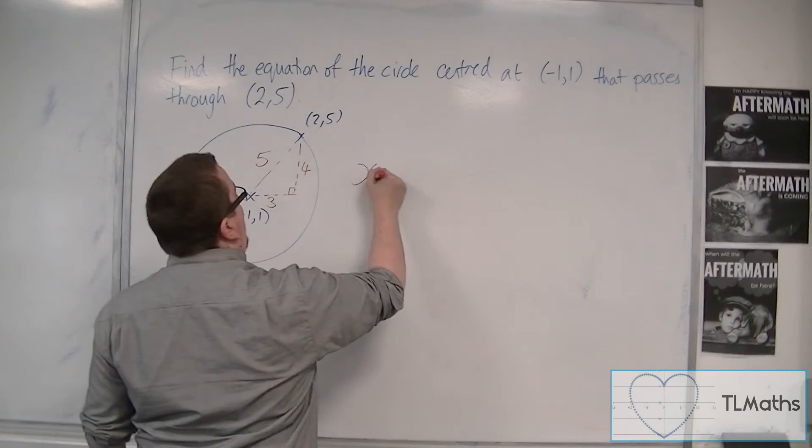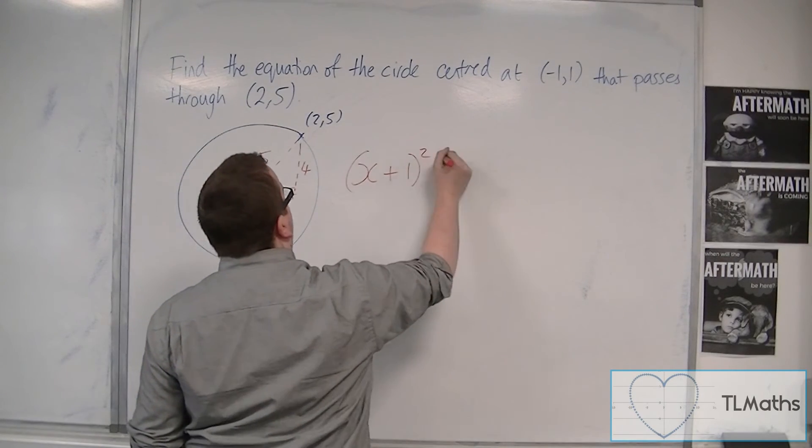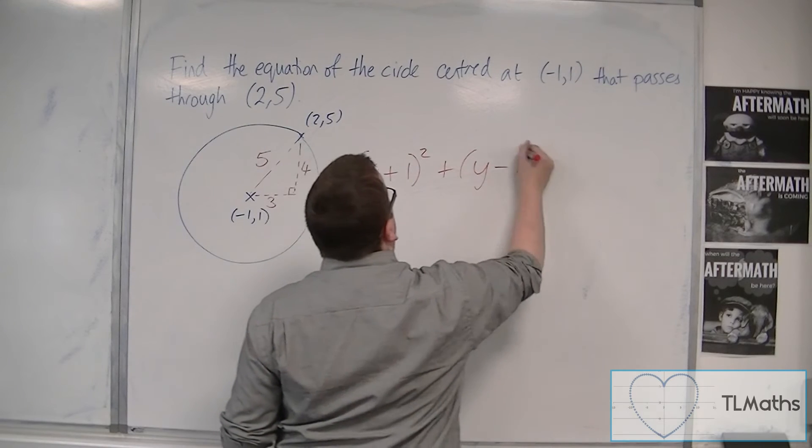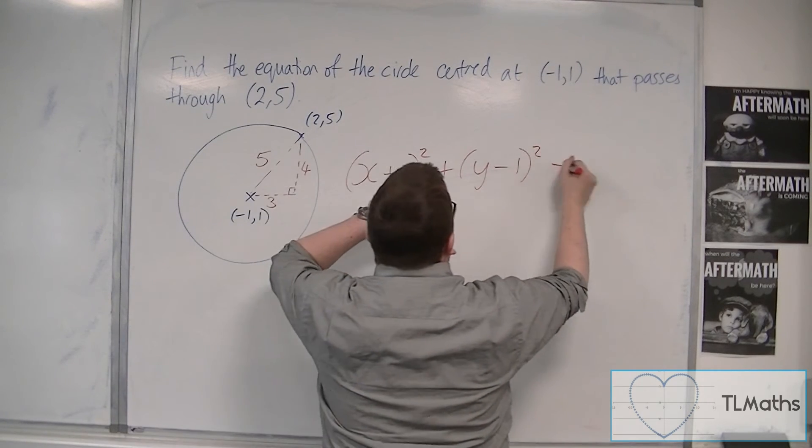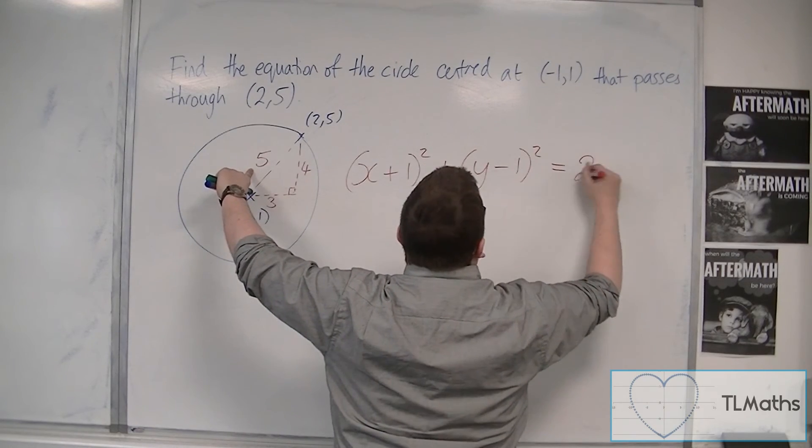So the equation is (x + 1)² + (y - 1)² = 5², or 25. That takes care of the center of the circle.